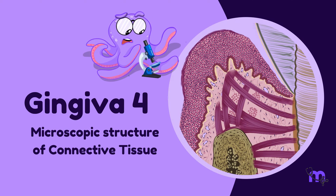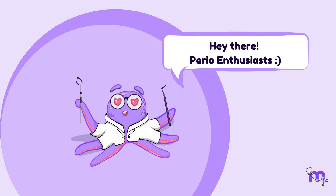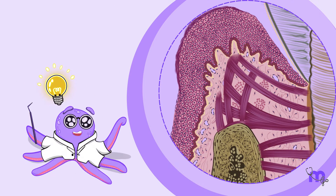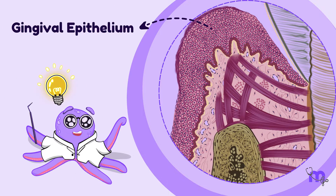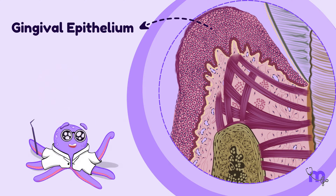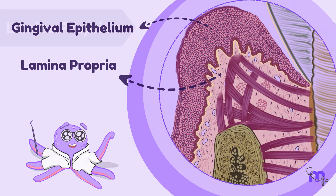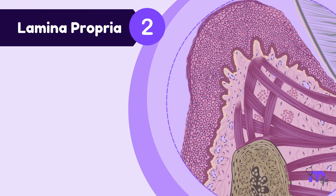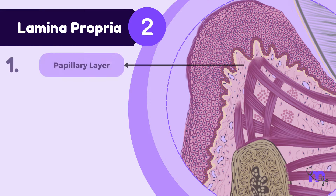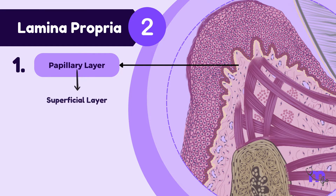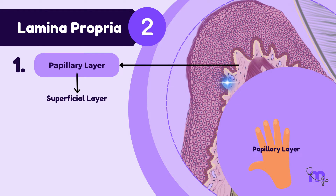Gingiva: microscopic structure of connective tissue. Remember when we talked about the gingival epithelium? We're about to explore its cool cousin, the lamina propria. Lamina propria is divided into two portions: the papillary layer, which is the most superficial, consisting of finger-like projections that interlock with the epithelial rete pegs.